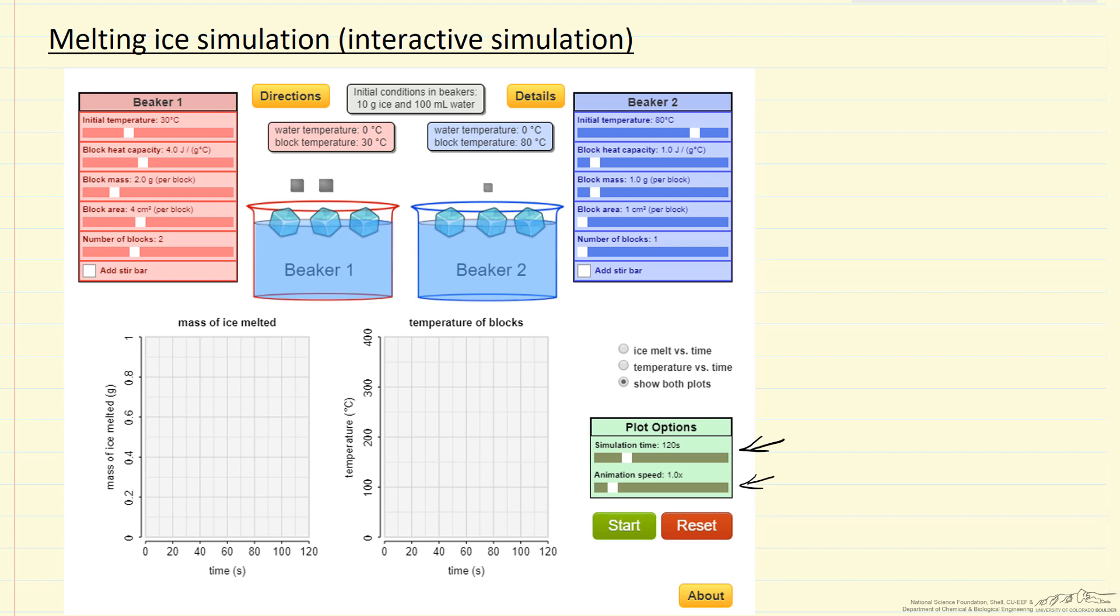Now this simulation makes some assumptions. One, we have perfect mixing, so the temperature throughout the beaker is uniform. And as long as ice is present, it's at zero degrees C. And the temperature within the block is uniform. In other words, the heat transfer, the thermal conductivity of the block, is high compared to the heat transfer between the block and the water. And the end result is that we're going to assume the block temperature changes throughout at the same rate.